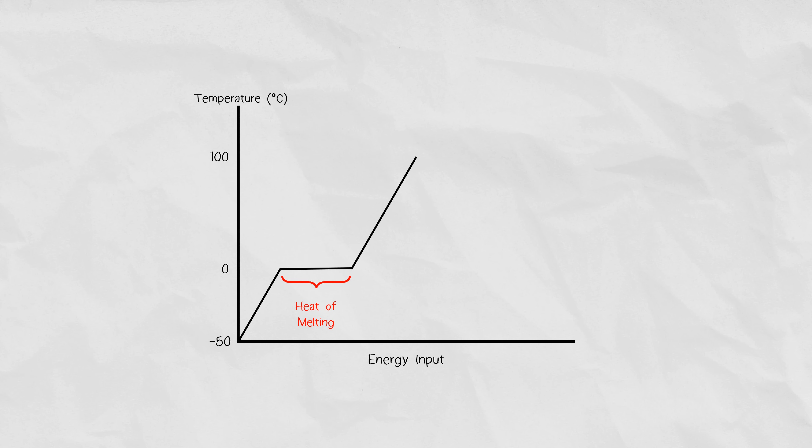This same process happens when water boils. At 100 degrees Celsius, liquid water is beginning its transition to a gas, so it's using the heat energy from the flame to transition states at a constant temperature of 100 degrees. This is known as the heat of vaporization.